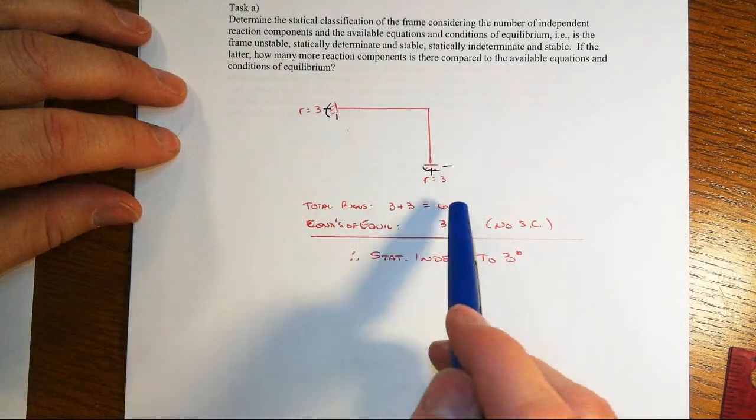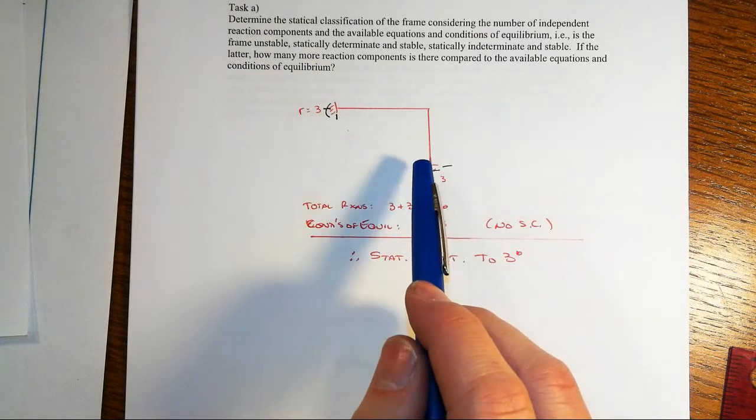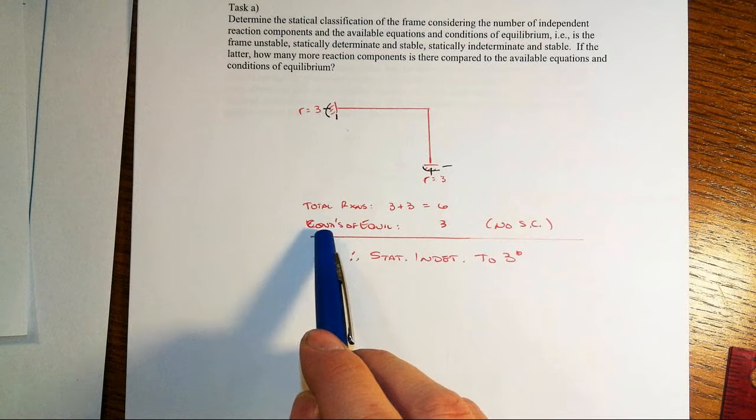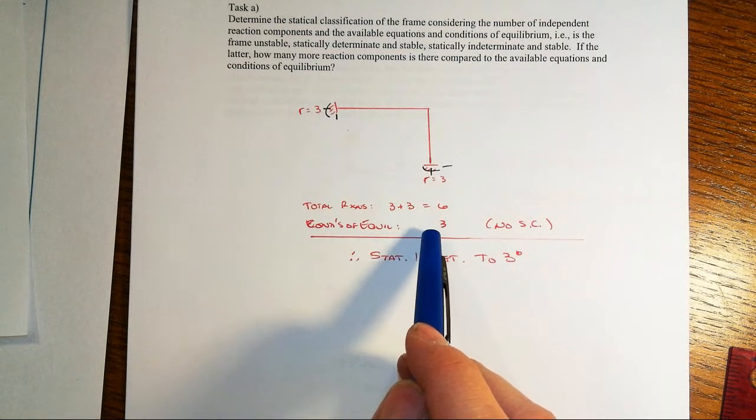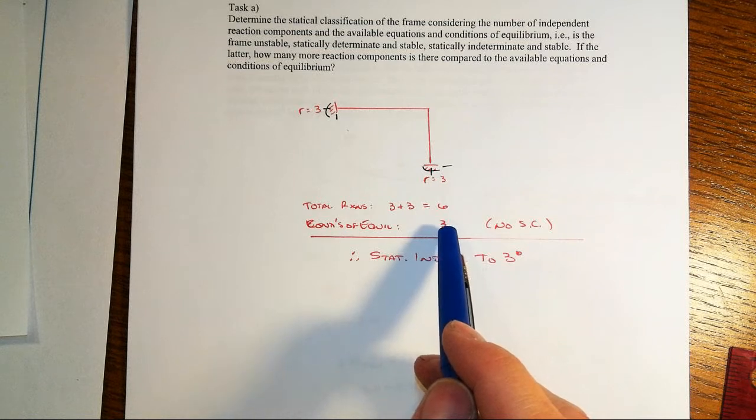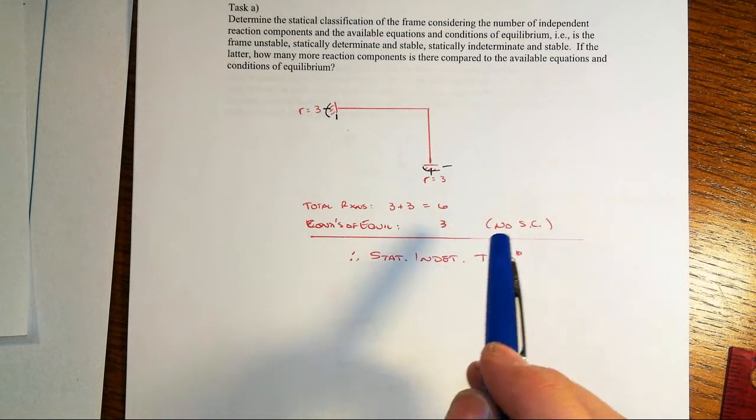That's three plus three. So a total of six reaction components that are helping to support whatever the loads are and transfer into the foundation. The conditions of equilibrium here are we have three equations of equilibrium from 2D, sum of force in the X, sum of force in the Y, and we can't have any rotational effects sum of moments, all equaling zero.